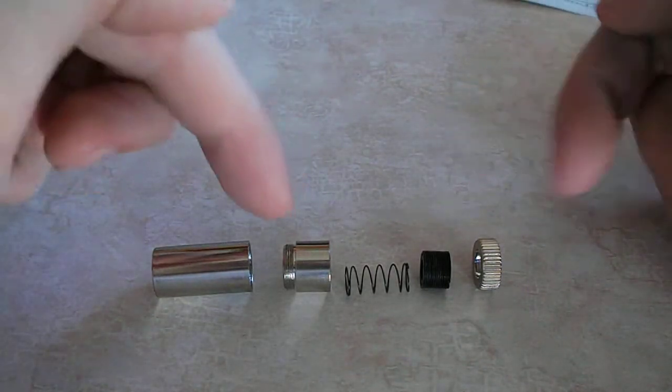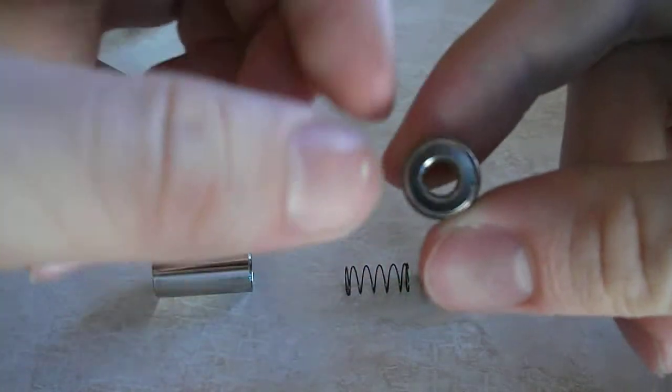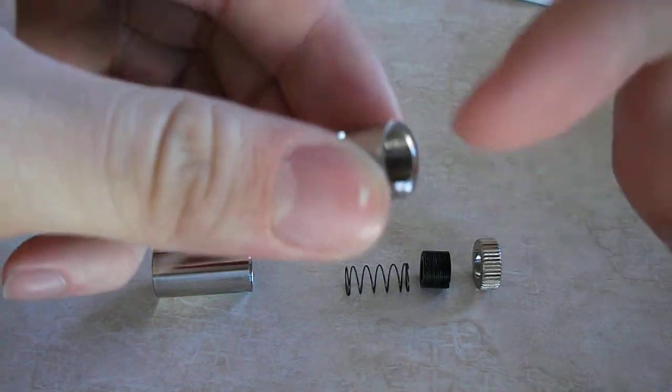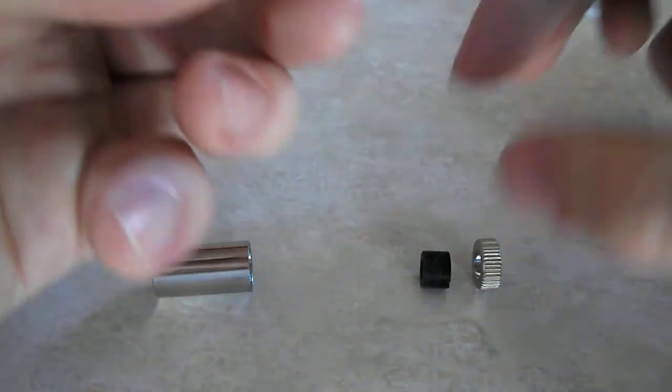Anyways, this is where the diode itself is mounted into this fitting here, this end here. The inside is threaded. You'll have the spring, you'll insert the spring into there.